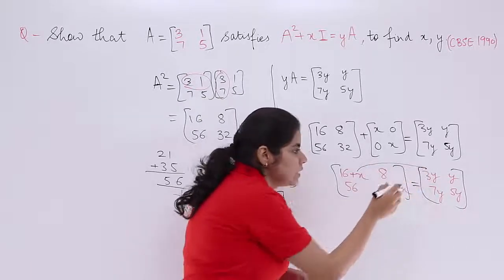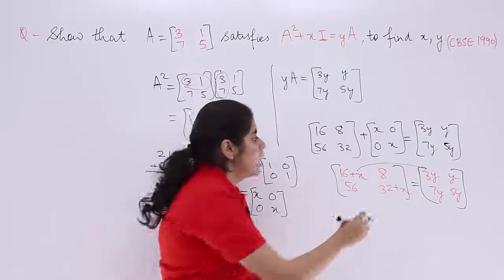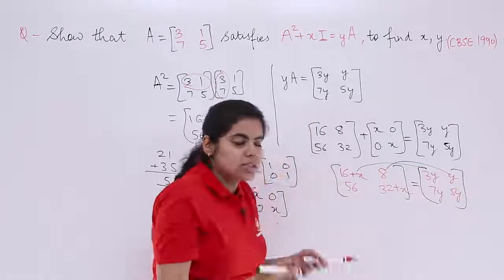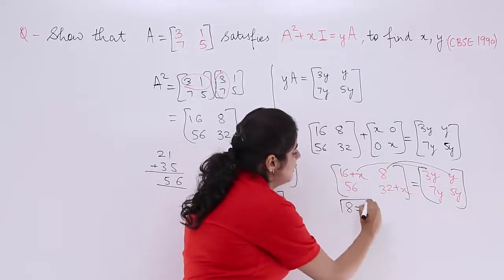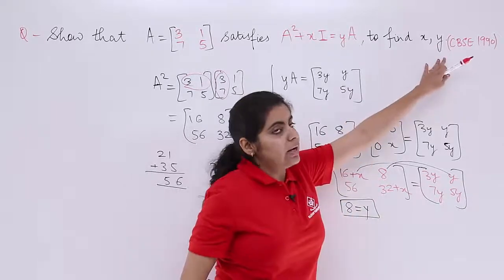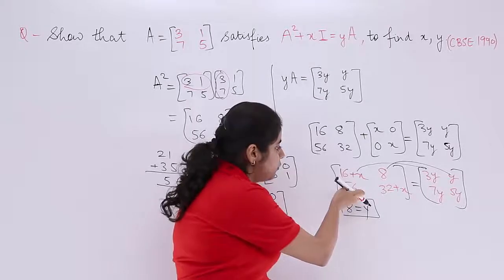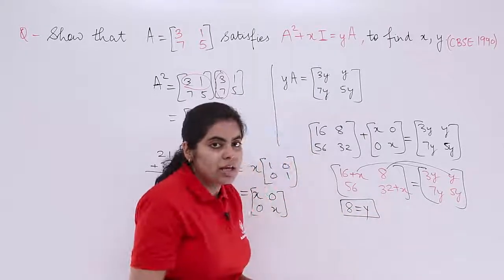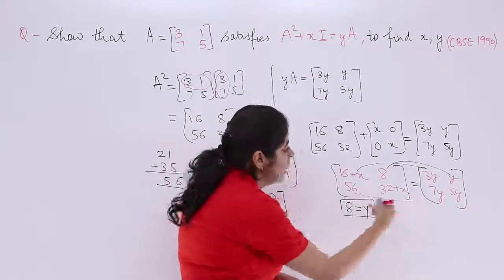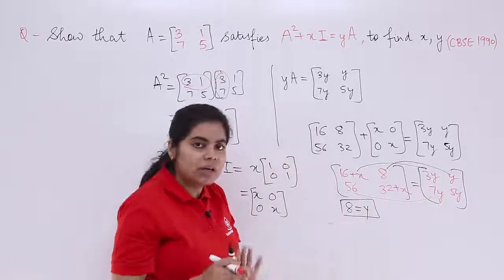That means 16 plus X is equal to 3Y. 8 is equal to Y. So simply 8 is equal to Y. First value found out. X and Y were needed. Y found out. Next, 56 is equal to 7Y. 56 is equal to 7Y means what? Again Y value is found out. Y we already know.